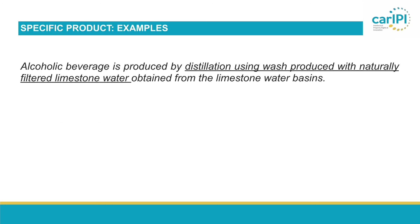Here are examples of descriptions. One says: an alcoholic beverage is produced by distillation using wash produced with naturally filtered limestone water obtained from limestone water basins. This description rather describes how the product is produced, and while this method surely gives the product specific characteristics, those characteristics are not identified here. We don't know what is so specific about the product itself. This would be considered not sufficient. Another example about an alcoholic beverage says it is renowned for its flavorful character, smoothness, and the distinctive sugarcane sweetness on the aroma. In this example, we know what the product qualities are — there is a clear description of the specificity of the product. This is a sufficient example.